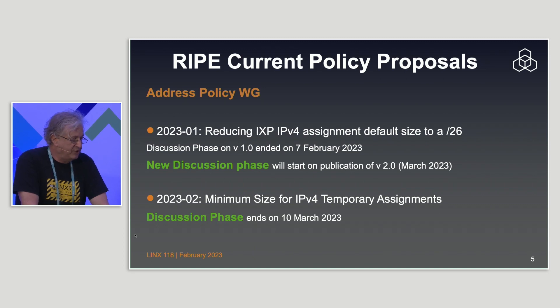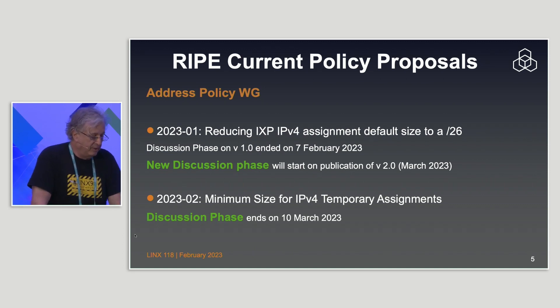Policy 2020-02: Minimum Size for IPv4 Temporary Assignments. Unless you run conferences or IP experiments, you probably don't know about IPv4 temporary assignments — but you can request a block of address space for temporary use, such as for running a conference or connectivity tests. There's a discussion to reduce the minimum size to a /24, down from a slightly larger previous value. This probably won't affect most people here.